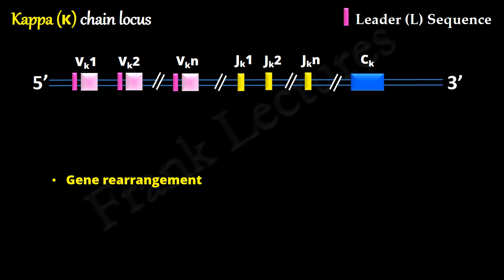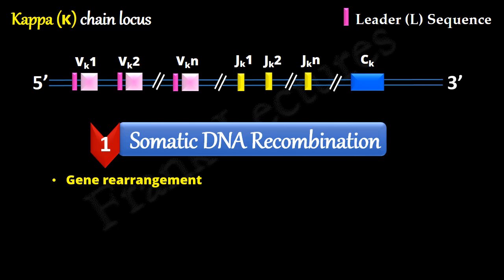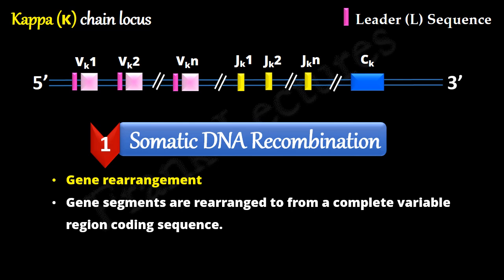In the first step of VDJ recombination, gene rearrangement occurs. This gene rearrangement is known as somatic DNA recombination. As the name reflects, this DNA recombination occurs only in somatic cells. The gene segments are rearranged to form a complete and unique variable region coding sequence. It occurs during early development of each lymphocyte.